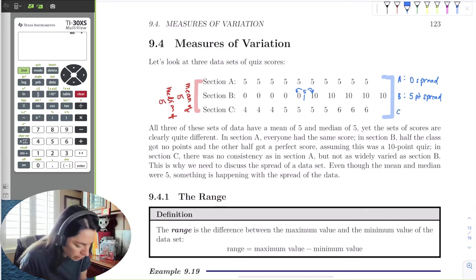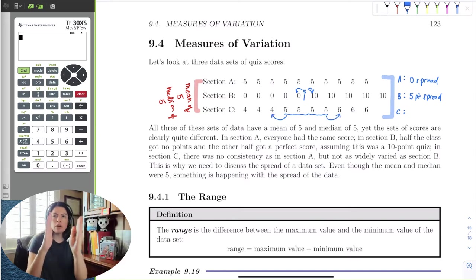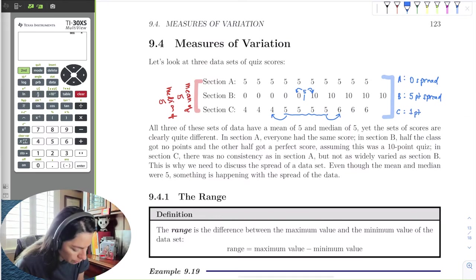The last part in section C, if I put 5 here, what's the distance from 5 to 4 and 5 to 6? From 4 to 5 is 1 point, and from 5 to 6 is 1 point, and we can see that there's a 1-point spread here.